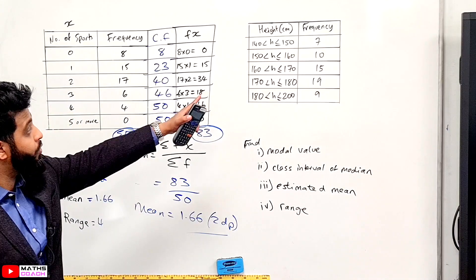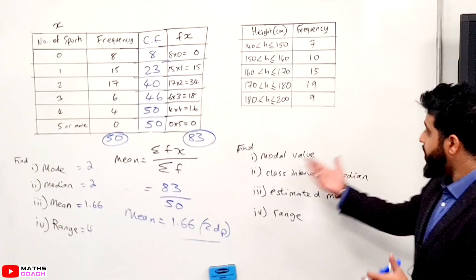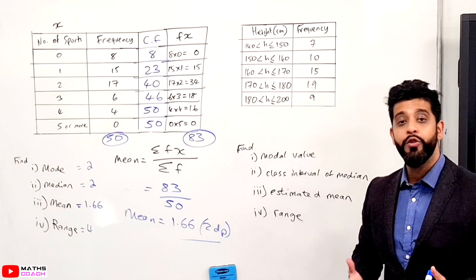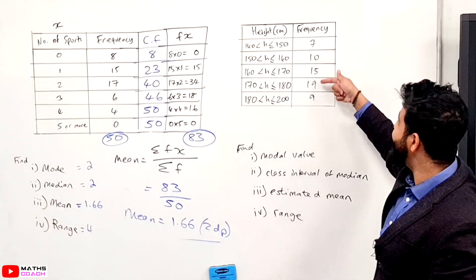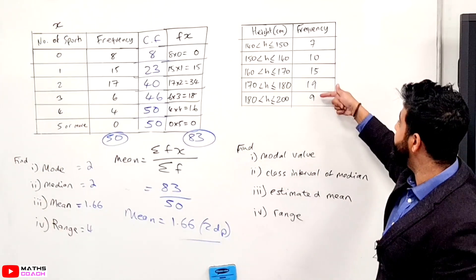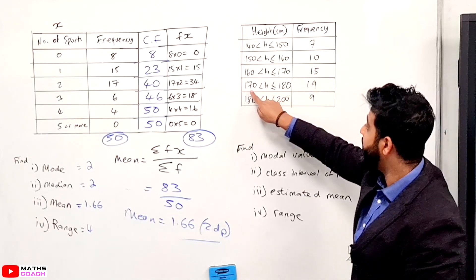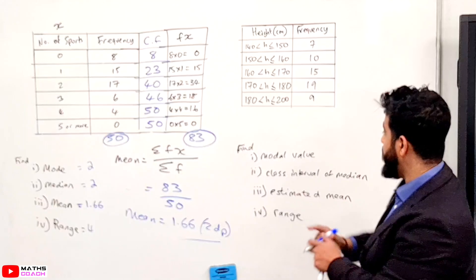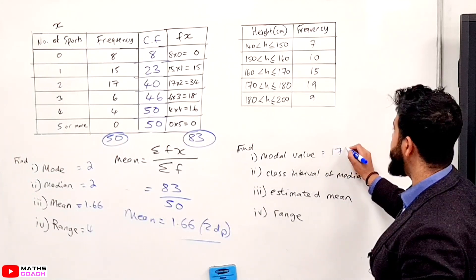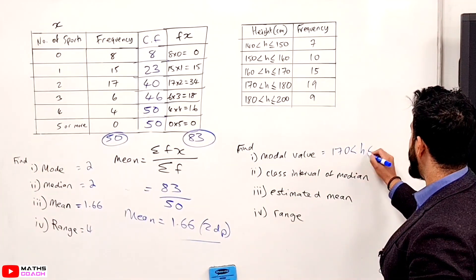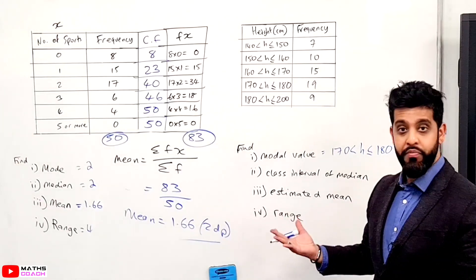Let's now do this on grouped data. To start with, we are going to find the mode — or modal value. What we are looking for is the highest number in the frequency. In this case it's 19. So the modal value is in the class interval 170 to 180.